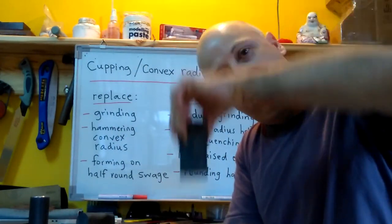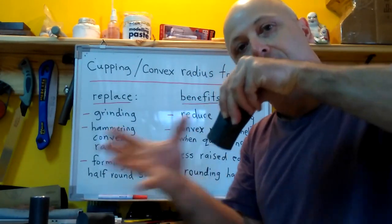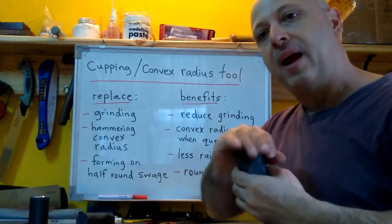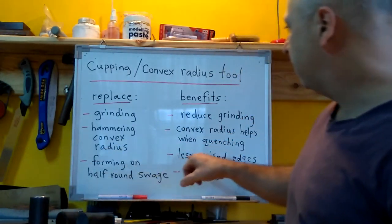So if you have a nice radius on it, when you quench it going vertical like this, it helps to cool it from the center out and it just gives you a nice more even quench on the face of a hammer.